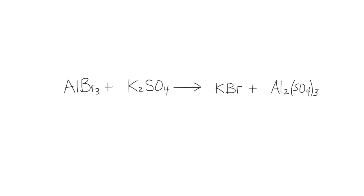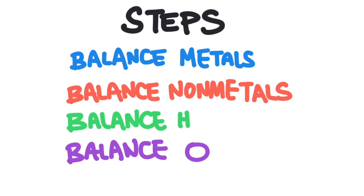For example, we can start with aluminum (Al) and make sure the number of aluminum atoms on the left equals the number on the right. Once we get that element balanced, we move on to the next. We want to work in this order: start with metals, then move to non-metals, then hydrogen, and then oxygen last — so the very last thing we balance is oxygen.